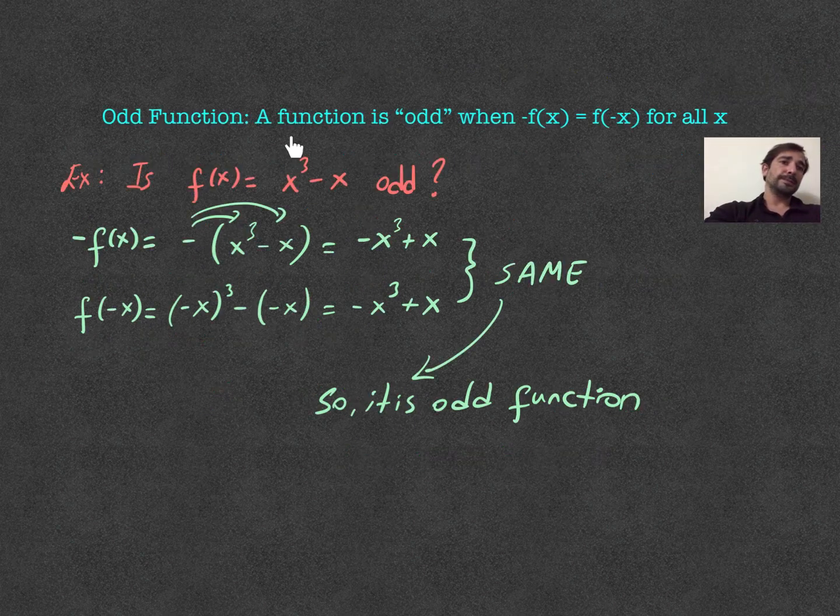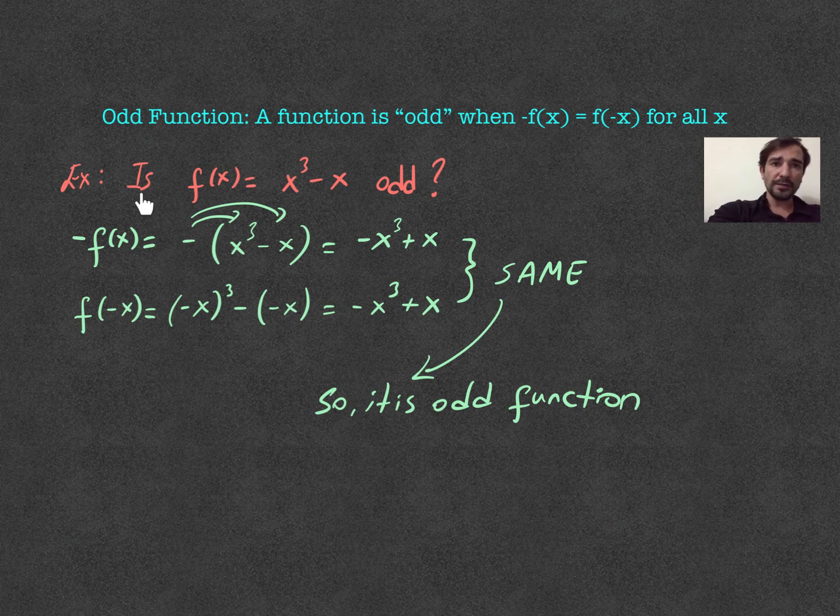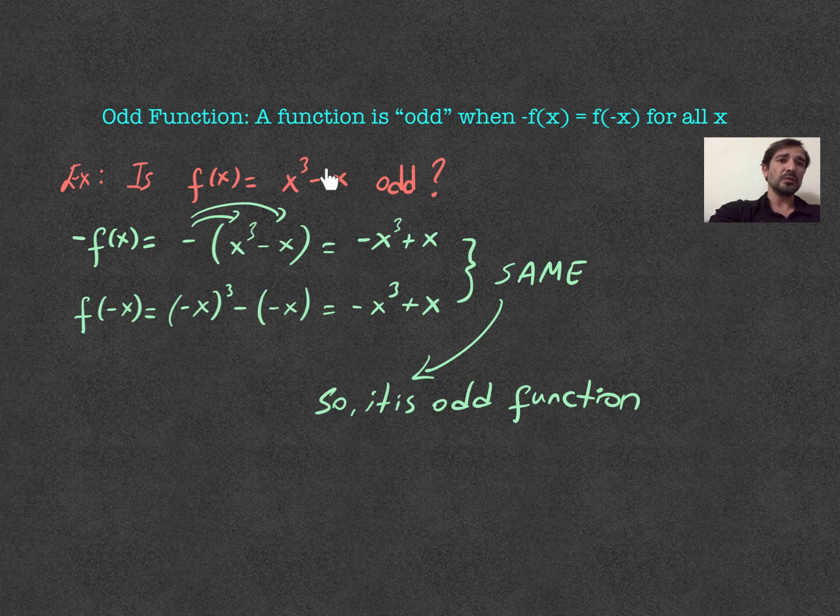For the odd function, it is odd when negative f of x equal to f negative x for all x's. So, let's observe this example. x power of 3 minus x. We want to show this whether it is odd or not.